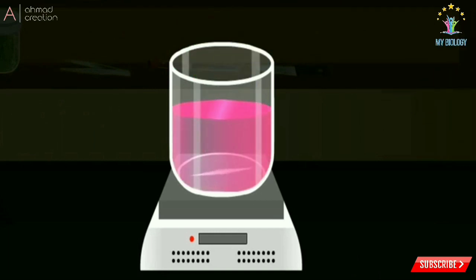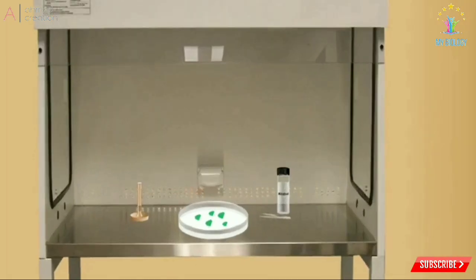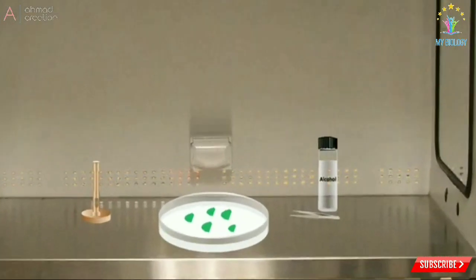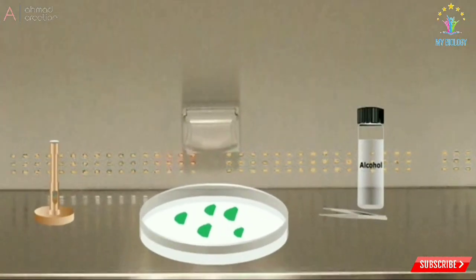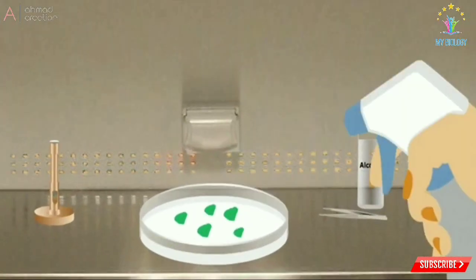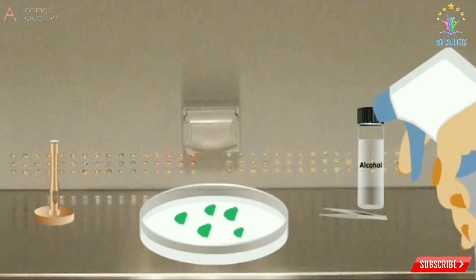The commonly used auxins are IAA. The pH of the medium is maintained by adding NaOH, as higher pH makes the medium hard and low pH resists solidification.